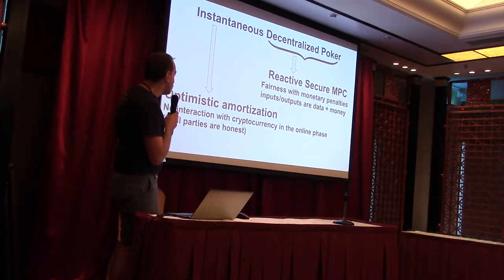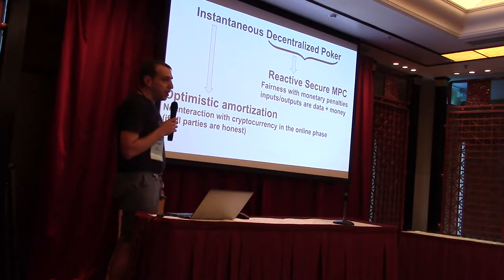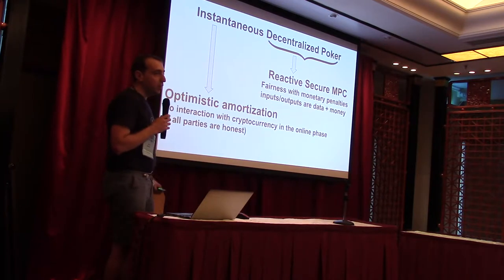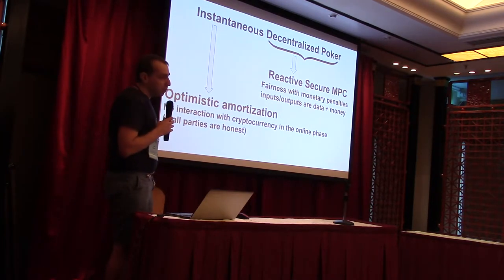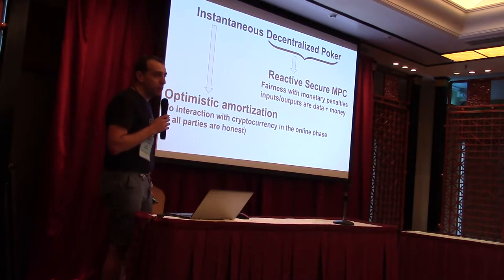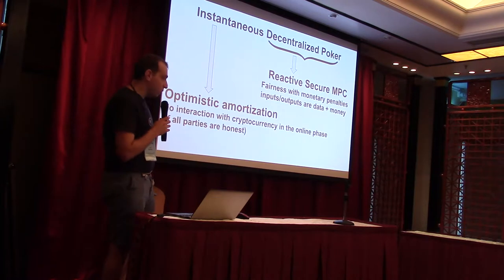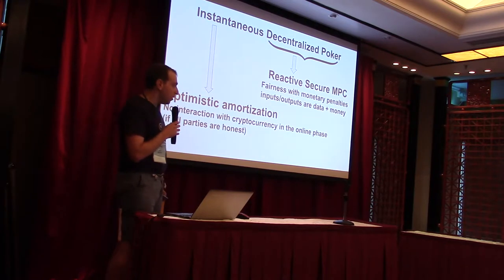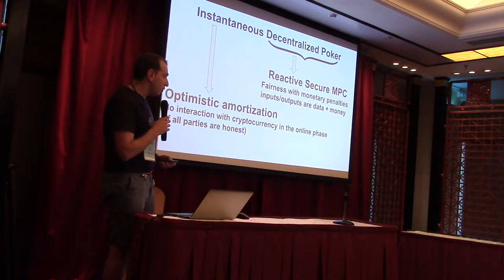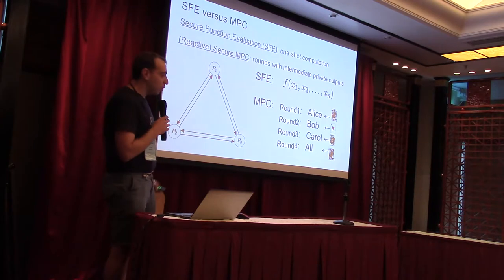"Instantaneous" means we want an initial phase of the protocol where parties submit security deposits to a cryptocurrency — this phase can be slow. After that, parties can communicate only among themselves without any interaction with the cryptocurrency, and all the guarantees of the protocol will hold. If all parties are honest, they continue communicating off-chain. If some are dishonest, then you need to go to the cryptocurrency network to enforce the rules.